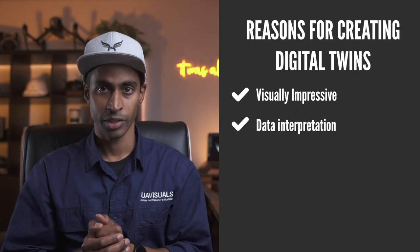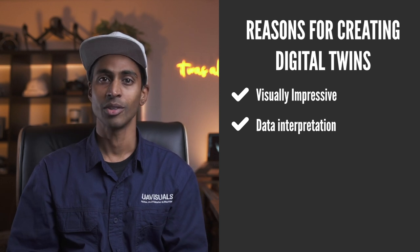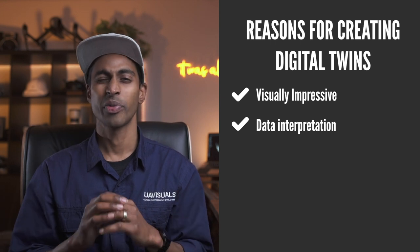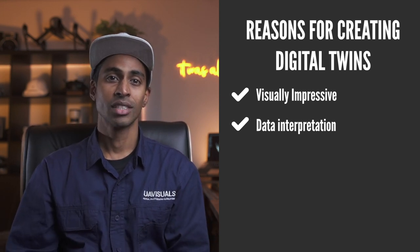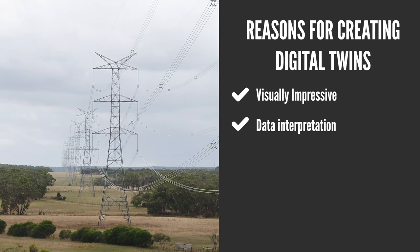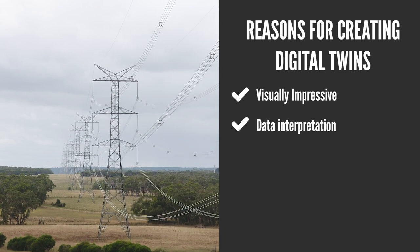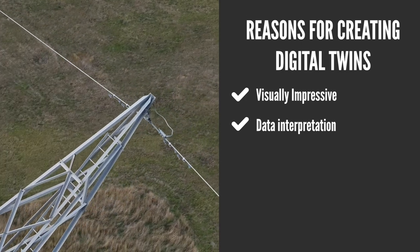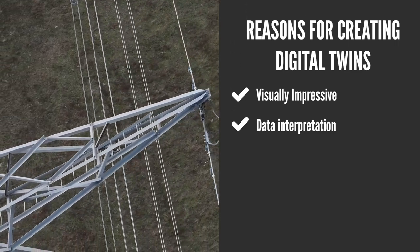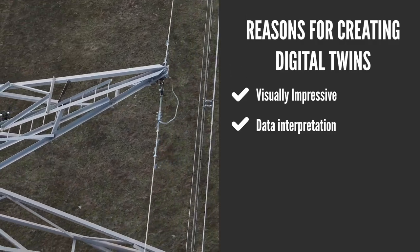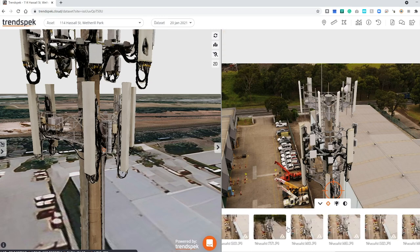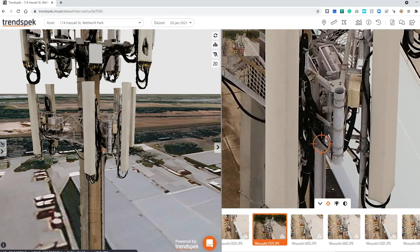Number two: data interpretation. Traditionally, inspectors would have to look through a file buried on their desktop or server and sift through hundreds if not thousands of photos just to get to what they're after. With assets like power lines or mobile towers, all these images look the same — finding one insulator or one corroded bolt on the inside of the second phase would be a huge task. The ability to interpret this data is now incredibly more advanced and fast.